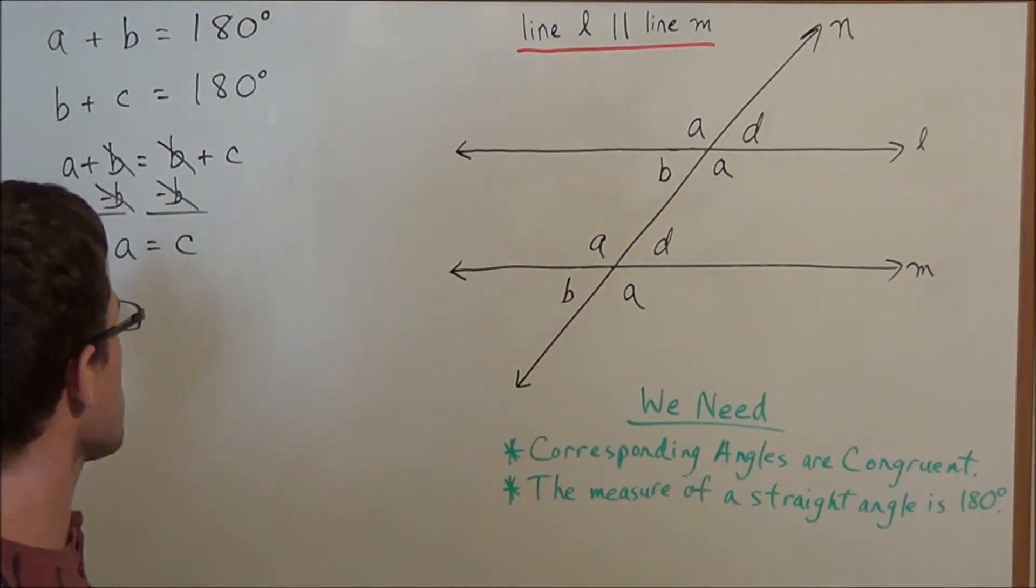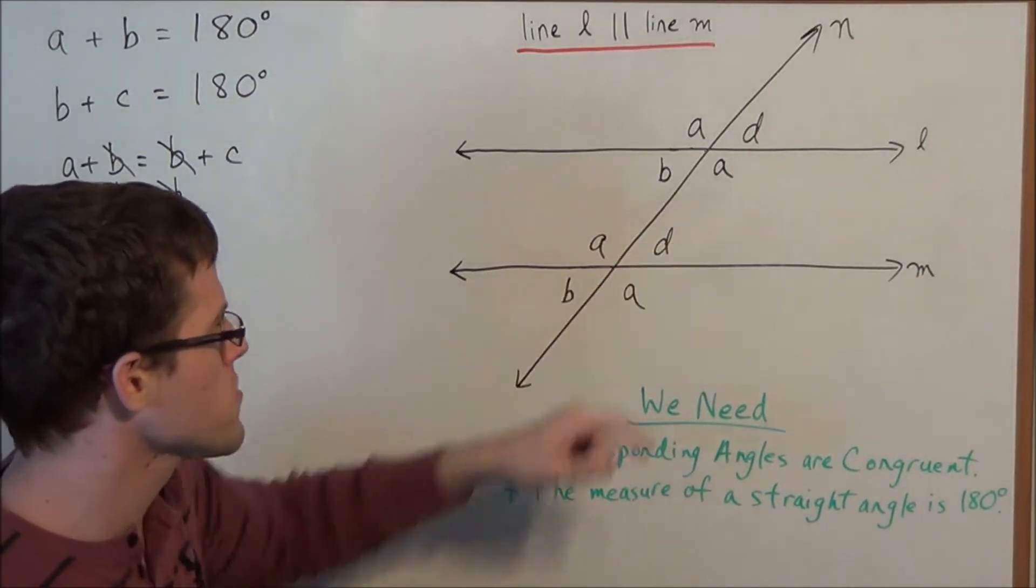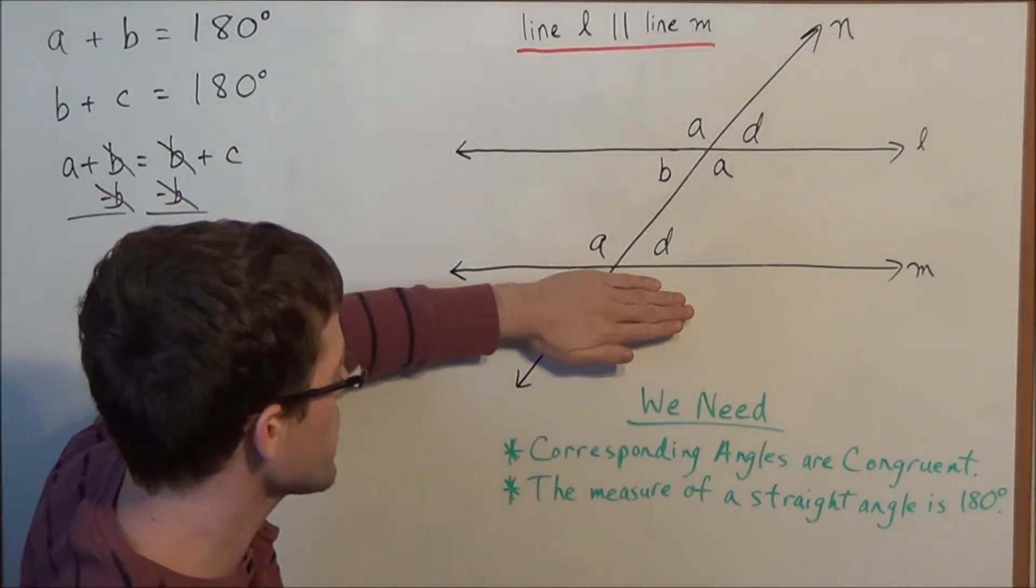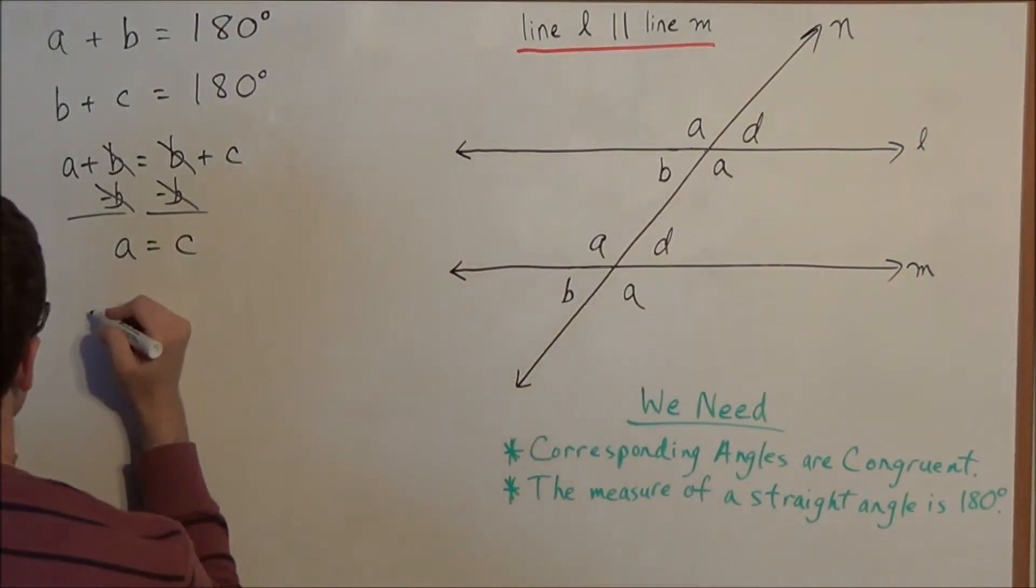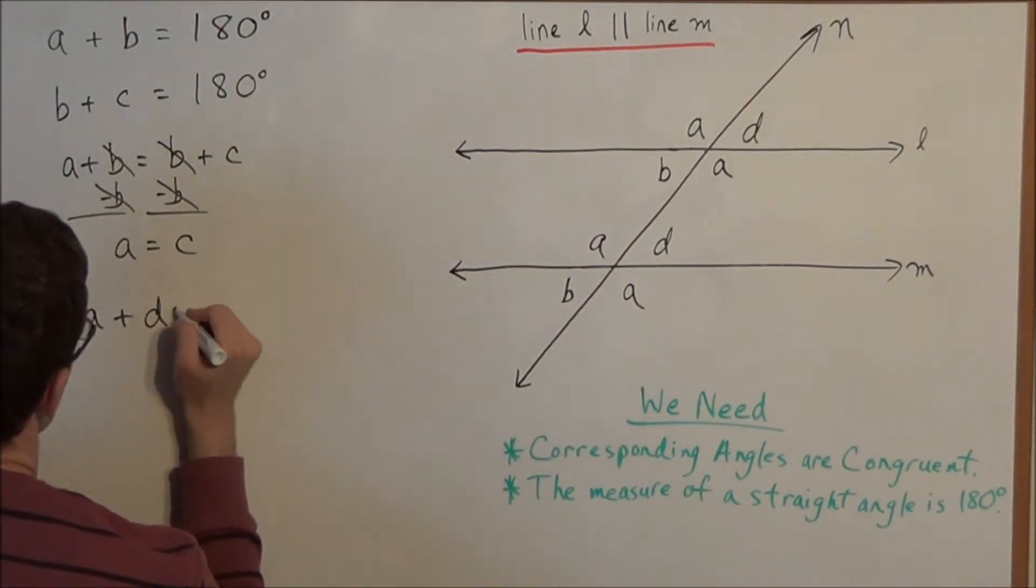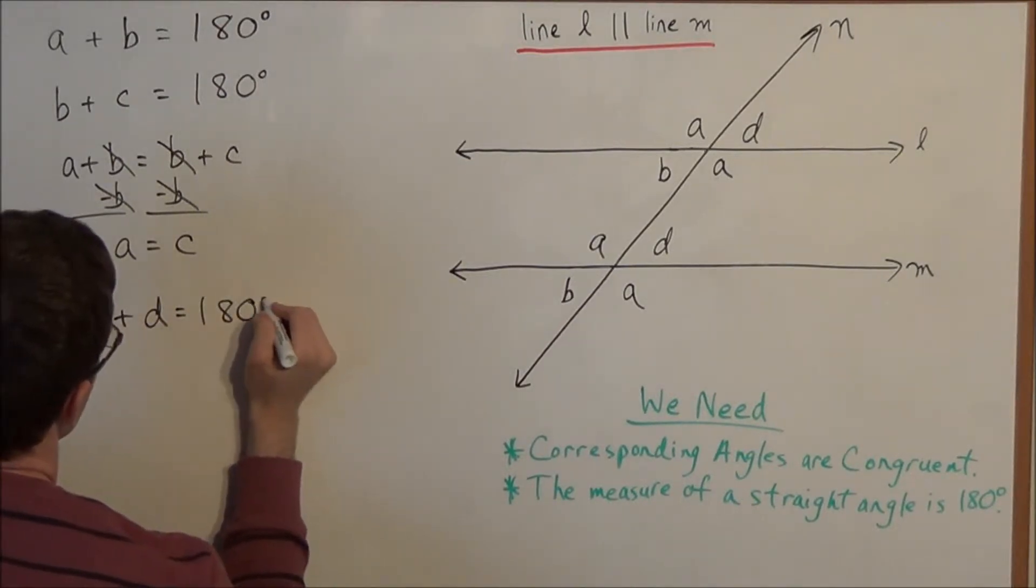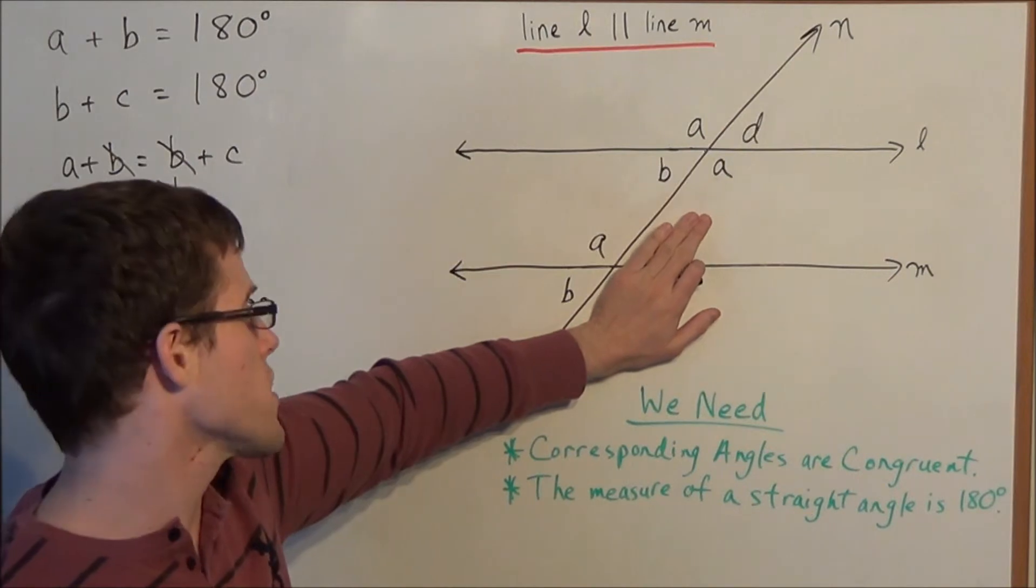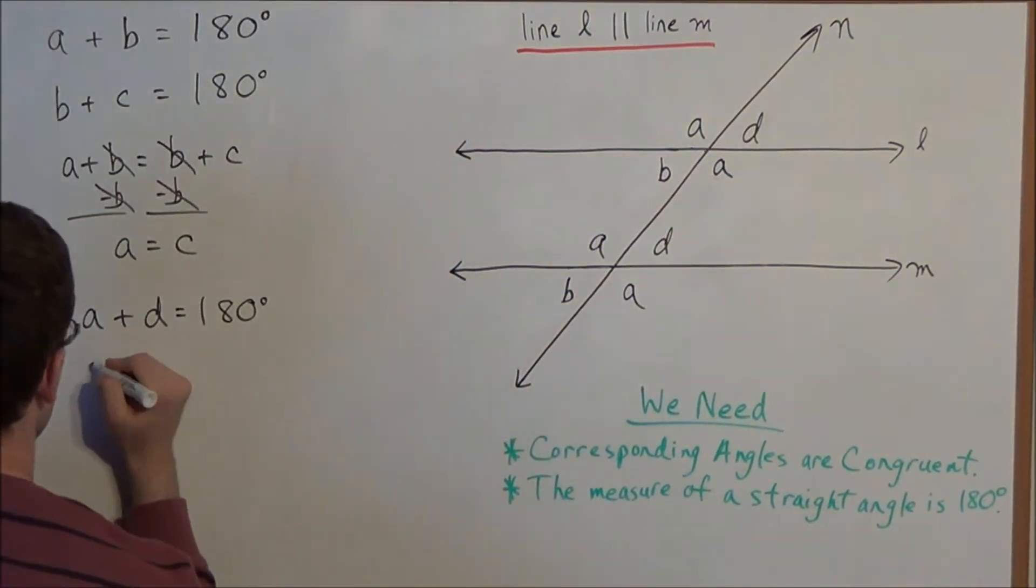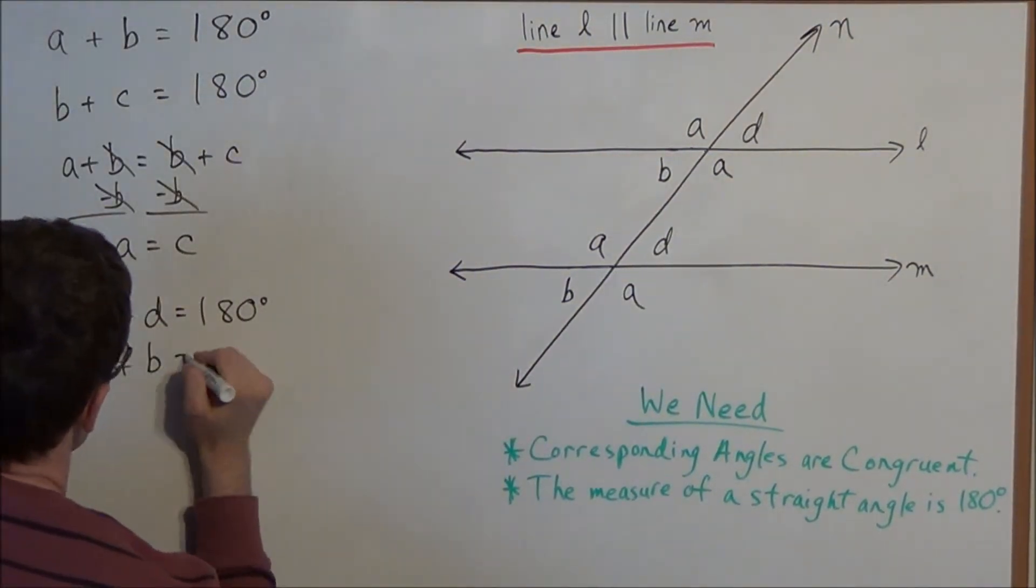And now I want to use a similar strategy to rename angle D. We have on this straight line, we have angle A and angle D form a straight line. So we have A plus D equals 180 degrees. And from before we have angle A and angle B also form a straight line. So A plus B is 180 degrees as well.